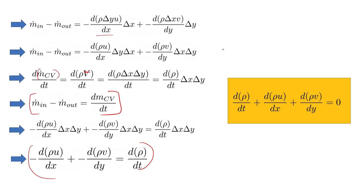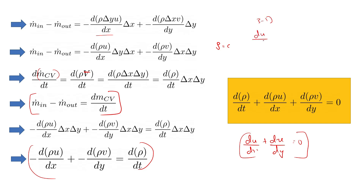For an incompressible fluid, rho is constant, so d(rho)/dt equals 0, and the equation reduces to du/dx plus dv/dy equals 0. This is the two-dimensional continuity equation. For three dimensions, similarly, du/dx plus dv/dy plus dw/dz equals 0, adding the w component in the z direction.